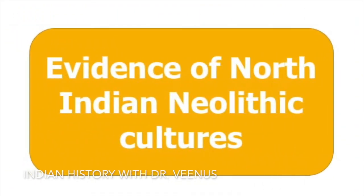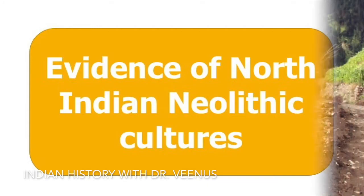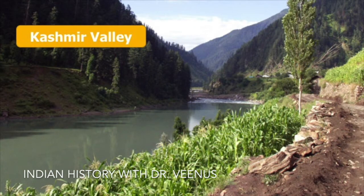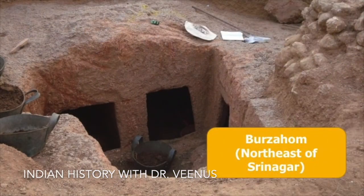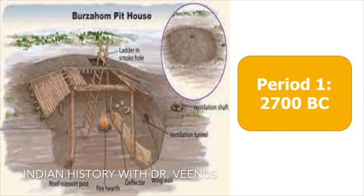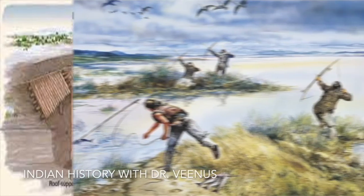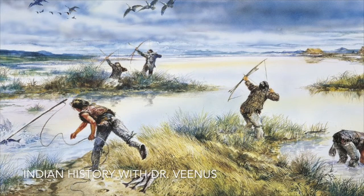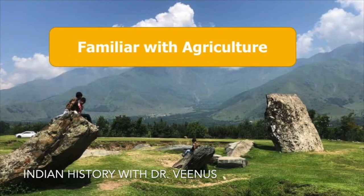Evidence of North Indian Neolithic cultures comes mainly from the Kashmir valley and is represented by a large number of sites above the flood plains of river Jhelum. The two principal sites of the area are Burzahom and Gufkral, north-east and south-east of Srinagar respectively. The Neolithic people of Burzahom, beginning with period 1 around 2700 BC, lived in circular or oval-shaped lakeside pit dwellings and subsisted on a hunting and fishing economy, being familiar also with agriculture.